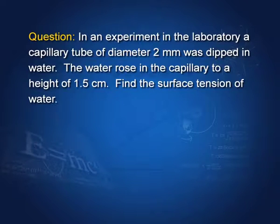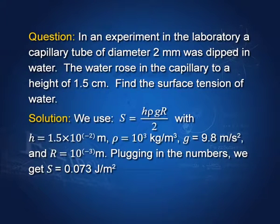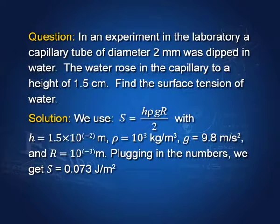Here is a question: in a laboratory experiment, a capillary tube of diameter 2 mm was dipped in water. The water rose to a height of 1.5 cm. Find the surface tension of water. Apply the formula: plug in h, ρ, g, and r = 1 mm = 0.001 m, and you get S = 0.073 J/m² for water. Remember, surface tension is energy per unit area, so the units are joules per meter squared.